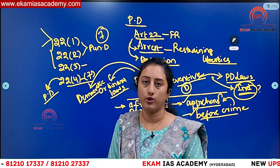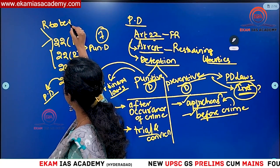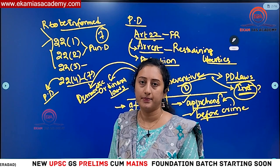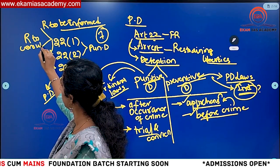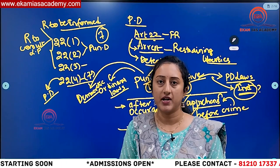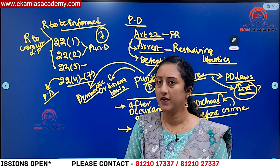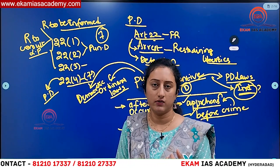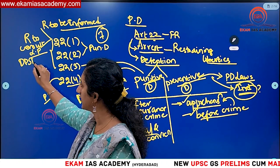Under Article 22 Clause 1, two provisions are there. First, the person who is arrested has a right to be informed of the grounds of arrest — based on those grounds he can file an application for bail. Second, he has a right to consult a legal practitioner or lawyer. In some situations people cannot afford legal practitioners, so it is a duty on the state. One of the Directive Principles of State Policy is to provide free legal aid — answer the article number in the comment section.